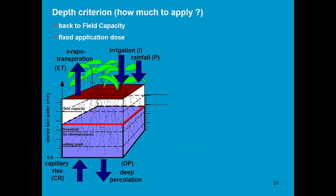There are two depth criteria. First of all, when a threshold is reached, triggering irrigation, return the water content in the root zone to field capacity.